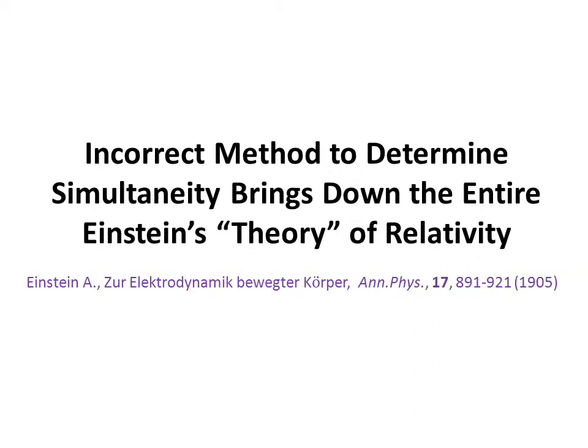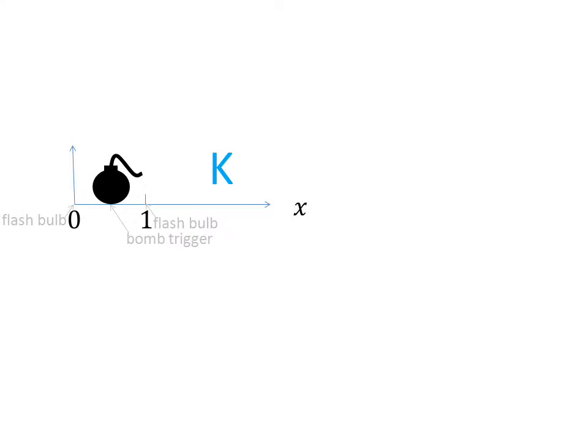This trivial fact remains unchanged despite failed attempts by the likes of Einstein to challenge absolute truths. To illustrate that the method with simultaneous arrival of two light rays proposed by Einstein is inappropriate for the determination of simultaneity of two events, observe two flash bulbs equidistant from the trigger of a bomb placed in stationary system K. If flashes reach simultaneously the trigger, the bomb will explode. Imagine that the two flash bulbs placed in stationary system K indeed flash simultaneously.